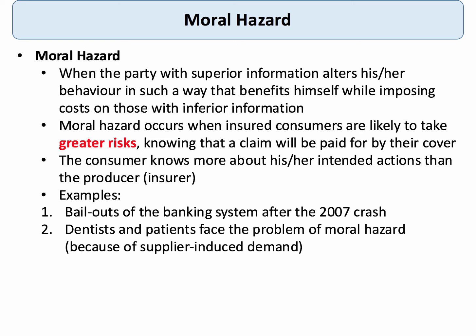One example of moral hazard comes in insurance, where people who are insured are actually more likely to take greater risks if they know or anticipate that a claim will be paid for by their insurance cover. Clearly the consumer of the insurance product — the car driver for example — knows more about his or her intended actions than the insurer, the producer in this case.